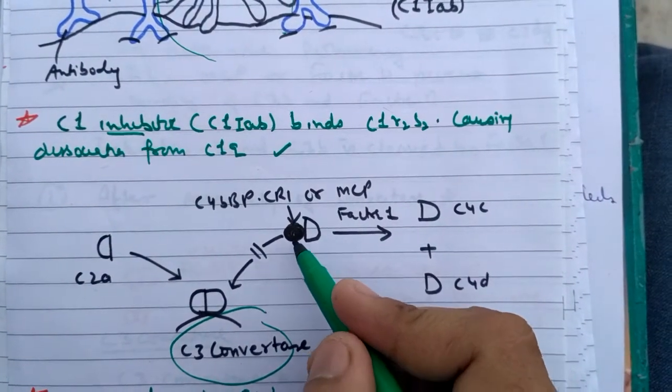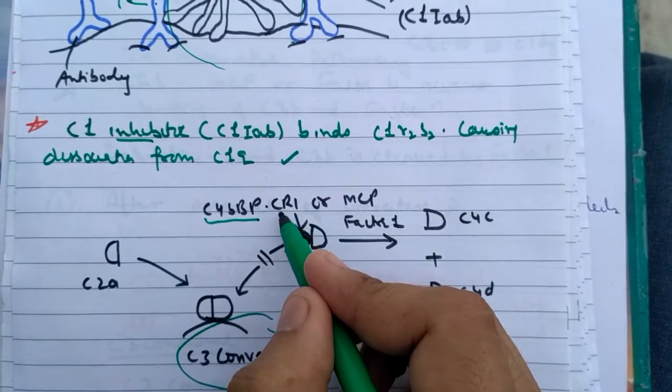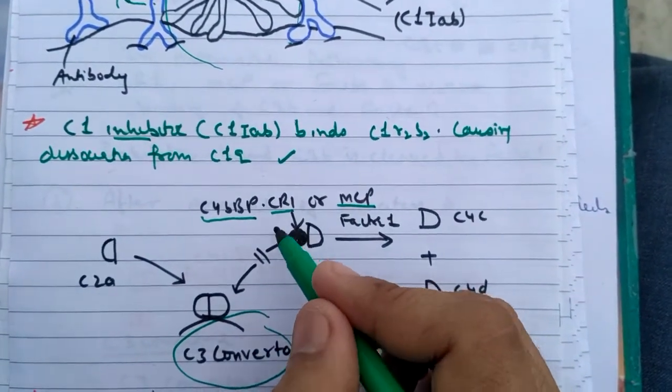There is binding of protein, i.e. C4BBP, CR1, or MCP. Any one of them have the same function. When they are attaching here, they are dissociating it.